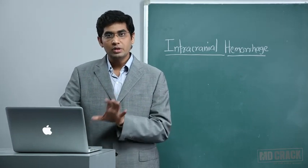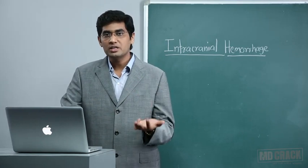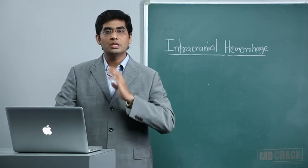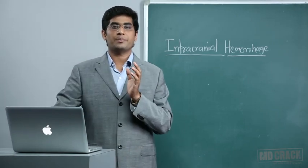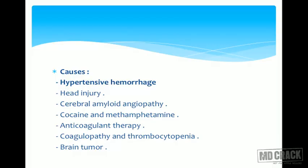Today's discussion will be focused on spontaneous bleed — hypertensive bleed or subarachnoid hemorrhage — and in general, what should be the management when a patient presents with intracranial bleed. The causes of IC bleed include hypertensive hemorrhage, head injury, cerebral amyloid angiopathy, drugs like cocaine or amphetamine, and anticoagulant therapy.